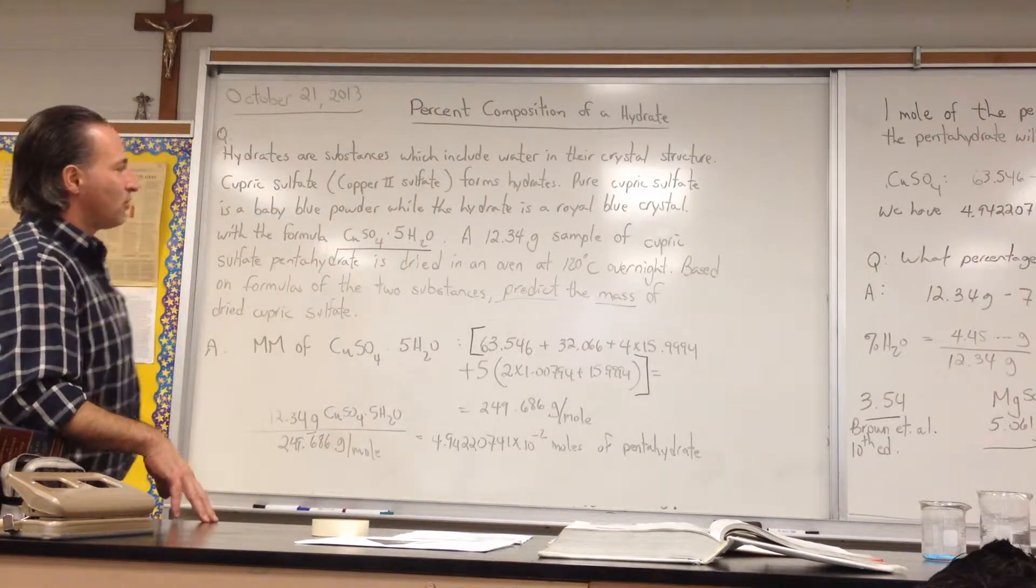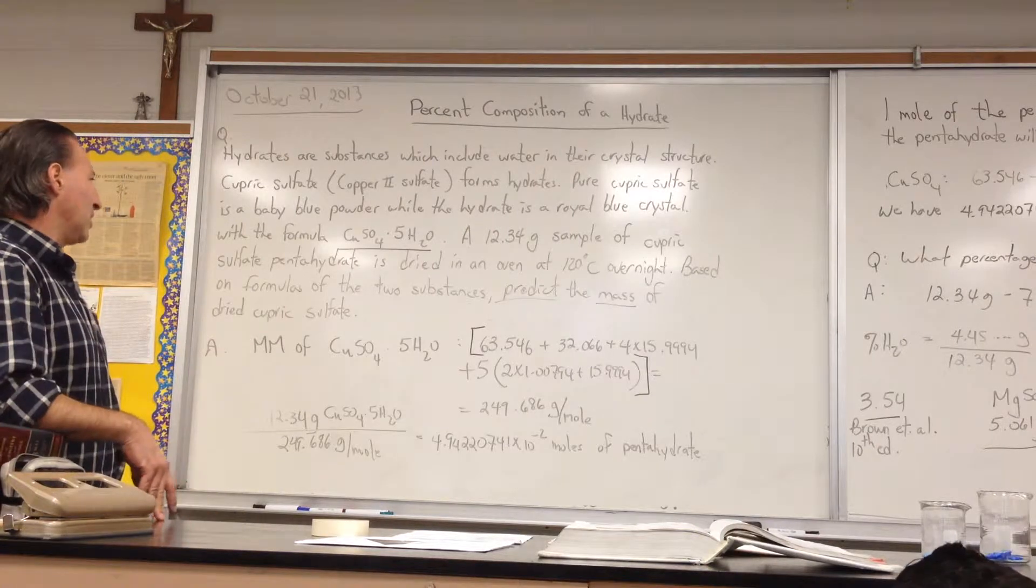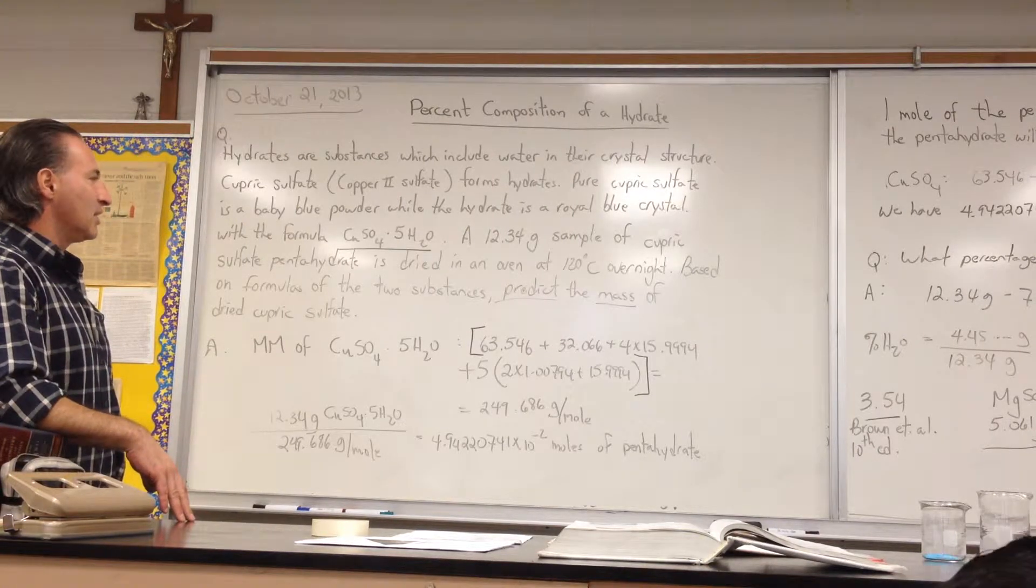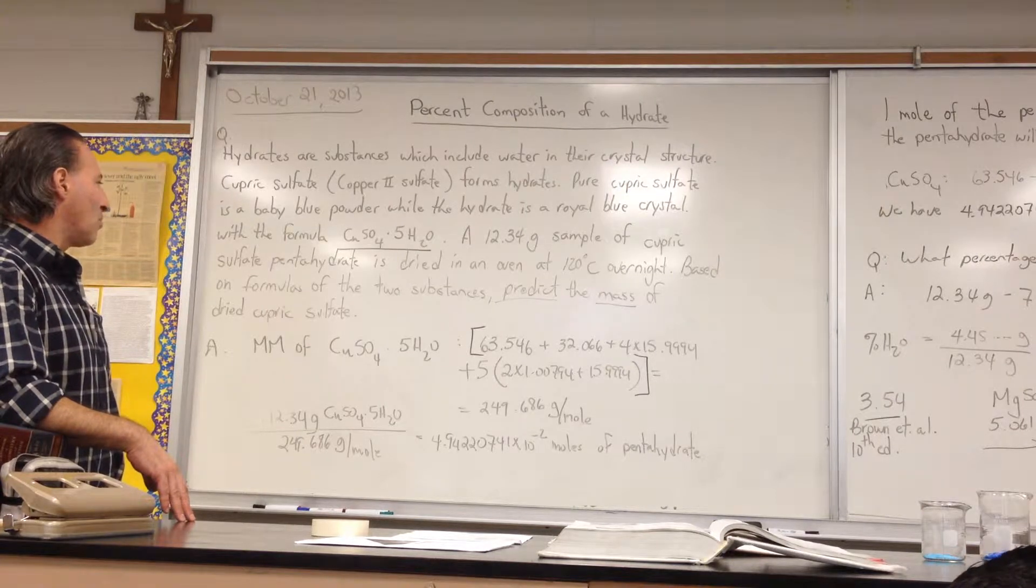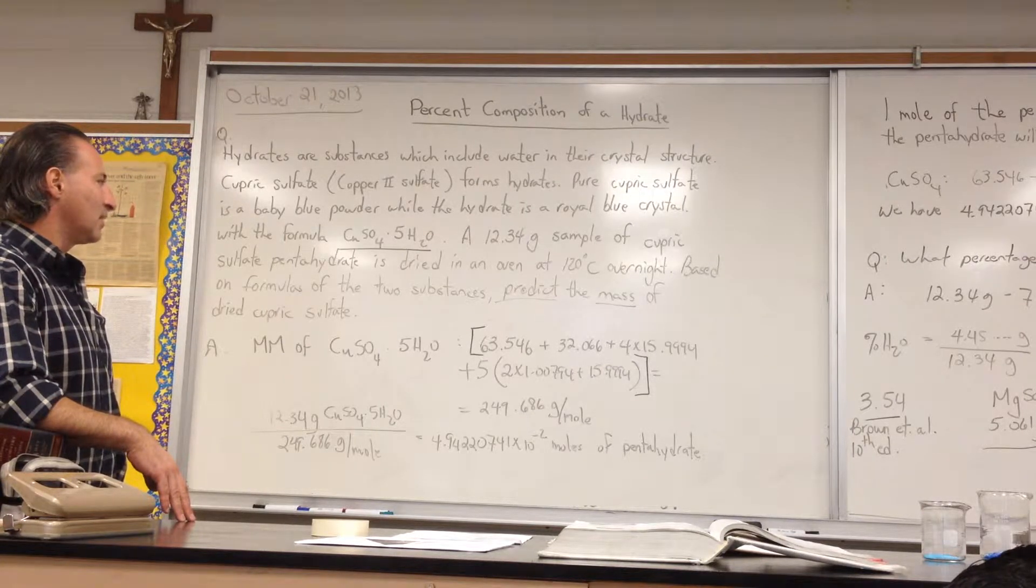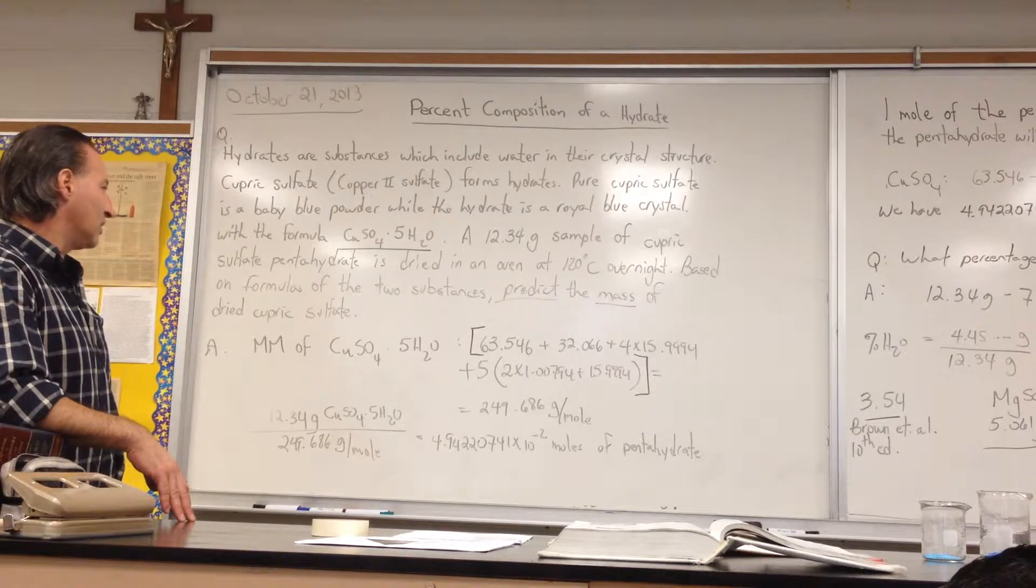The dot means that the water is incorporated into the crystal. A 12.34 gram sample of cupric sulfate pentahydrate is dried in an oven at 120 degrees Celsius overnight. Based on formulas of the two substances, predict the mass of the dried cupric sulfate.